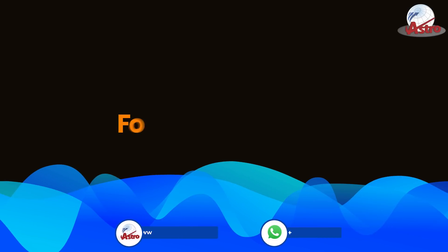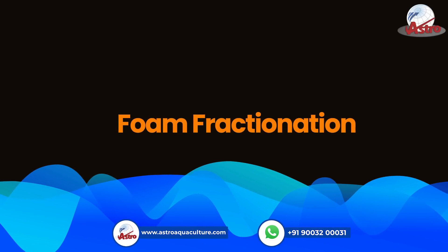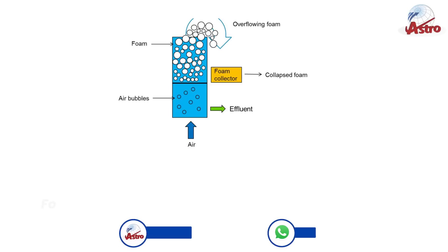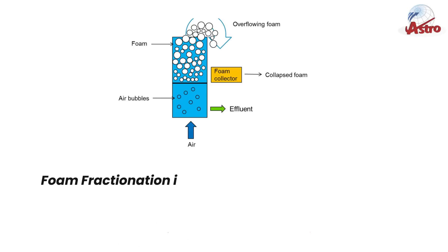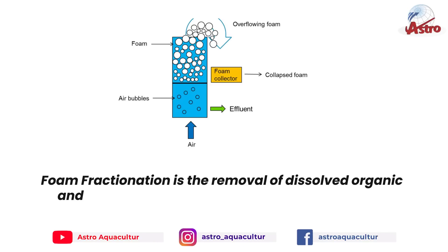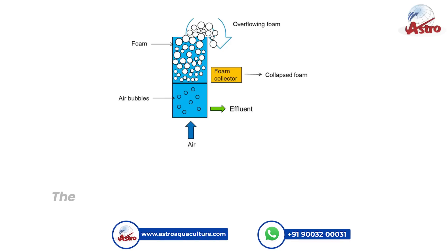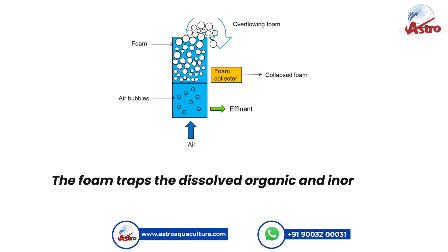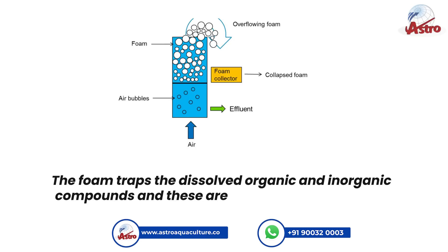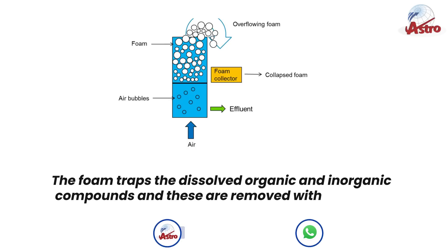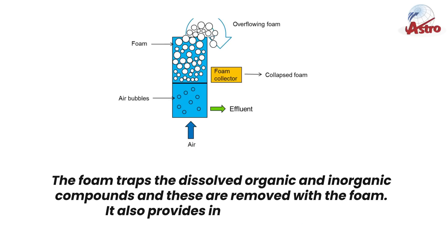Foam Fractionation is the removal of dissolved organic and inorganic compounds from dirty water by raising a column of foam. The foam traps the dissolved organic and inorganic compounds, and these are removed with the foam. It also provides increased aeration.